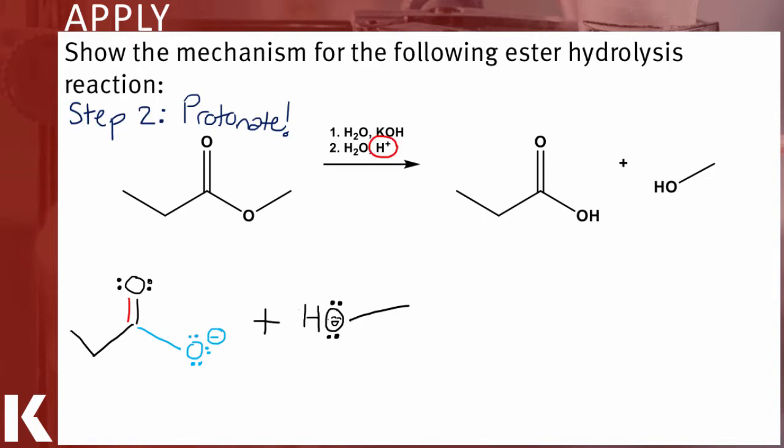This brings the reaction to step two, which is protonation. We're going to add some acid to protonate the carboxylate, creating our final carboxylic acid product. Once you add some protons to the reaction, the carboxylate's going to snap it right up. And the carboxylic acid will be happily electrically balanced.